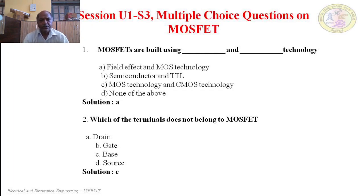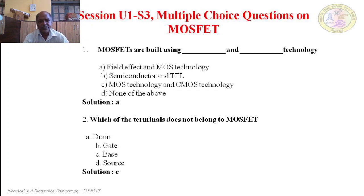Question 2: Which of the terminals does not belong to MOSFETs? Options: A — drain; B — gate; C — base; D — source. The correct answer is C — base. Base is a terminal of a BJT (bipolar junction transistor), but not of a MOSFET.